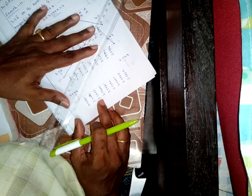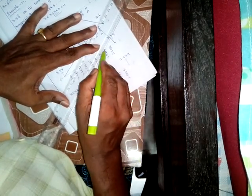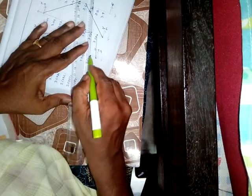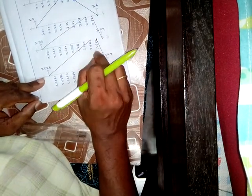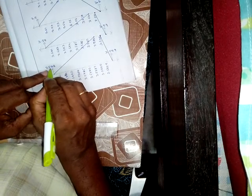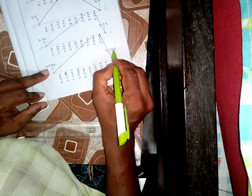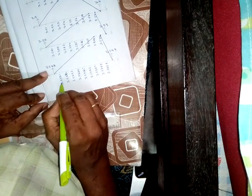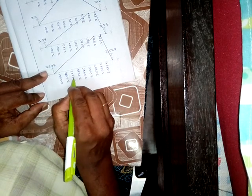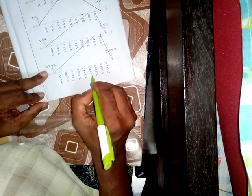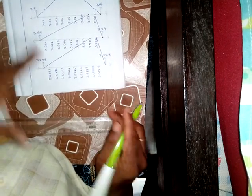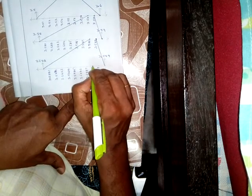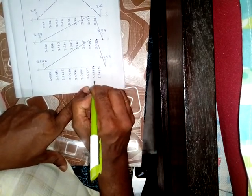Again divide the number line between 3.588 and 3.589 into 10 parts. After 3.588 comes: 3.5881, 3.5882, 3.5883, 3.5884, 3.5885, 3.5886, 3.5887, 3.5888, 3.5889. So we have located 3.5888 — that is the required number. So this is where we place the required number on the number line.